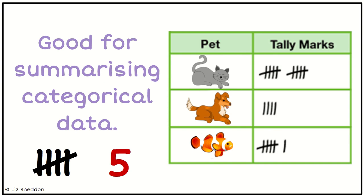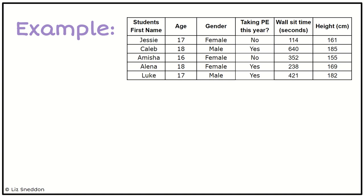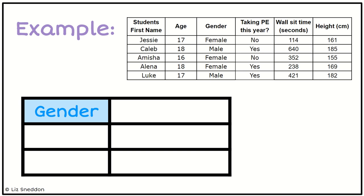So let's have a look at doing an example of this. I first of all need to start by choosing a categorical variable, so I'm going to choose gender. I need one column with a label gender, and I need to have my males and females.